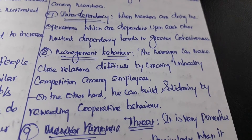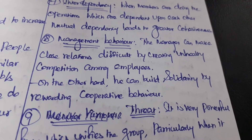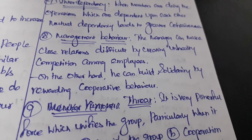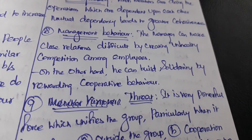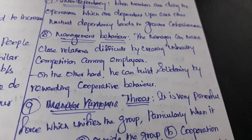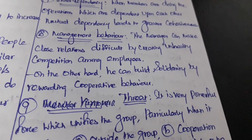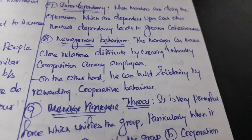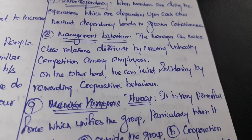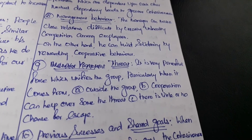The next factor is management behavior. The manager can make close relations difficult by creating unhealthy competition among employees. On the other hand, he can foster solidarity by rewarding cooperative behavior. The manager or leader will motivate members toward greater group cohesiveness by continuously rewarding group members. The manager influences group cohesiveness — sometimes encouraging it, sometimes not — but overall the manager significantly influences cohesiveness within the group.